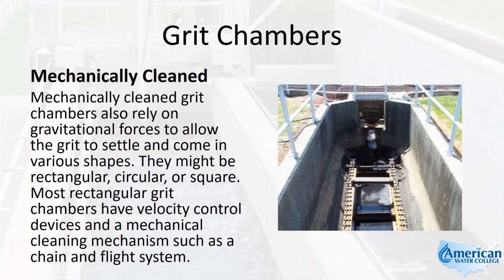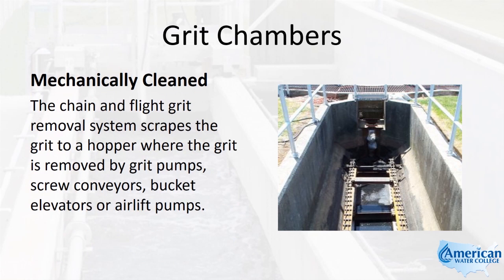Mechanically cleaned grit chambers also rely on gravitational forces to allow the grit to settle and come in various shapes. They might be rectangular, circular, or square. Most rectangular grit chambers have velocity control devices and a mechanical cleaning mechanism such as a chain and flight system. The chain and flight grit removal system scrapes the grit to a hopper where the grit is removed by grit pumps, screw conveyors, bucket elevators, or airlift pumps.